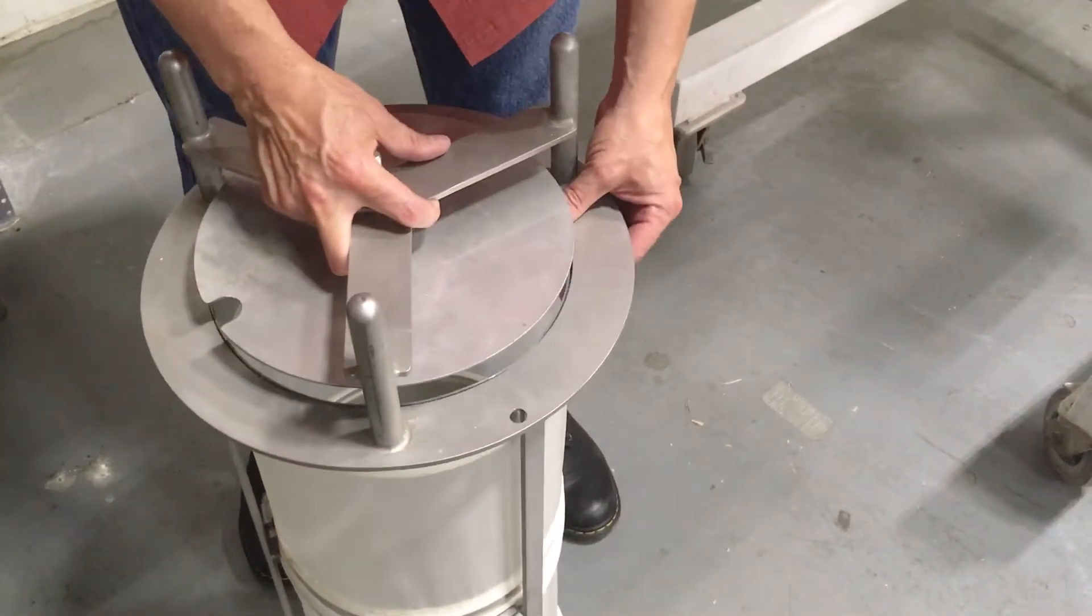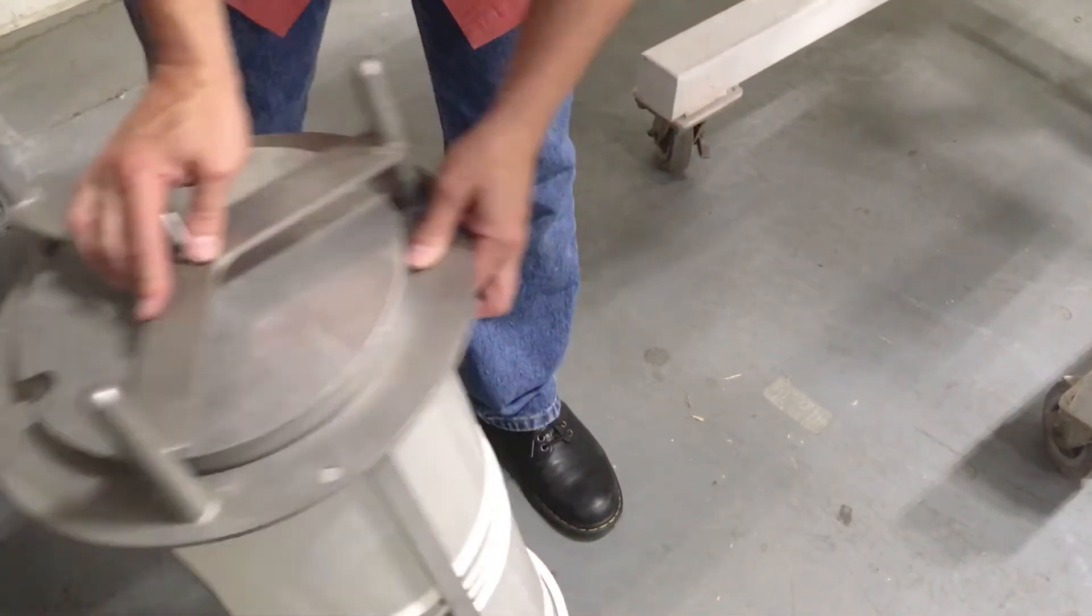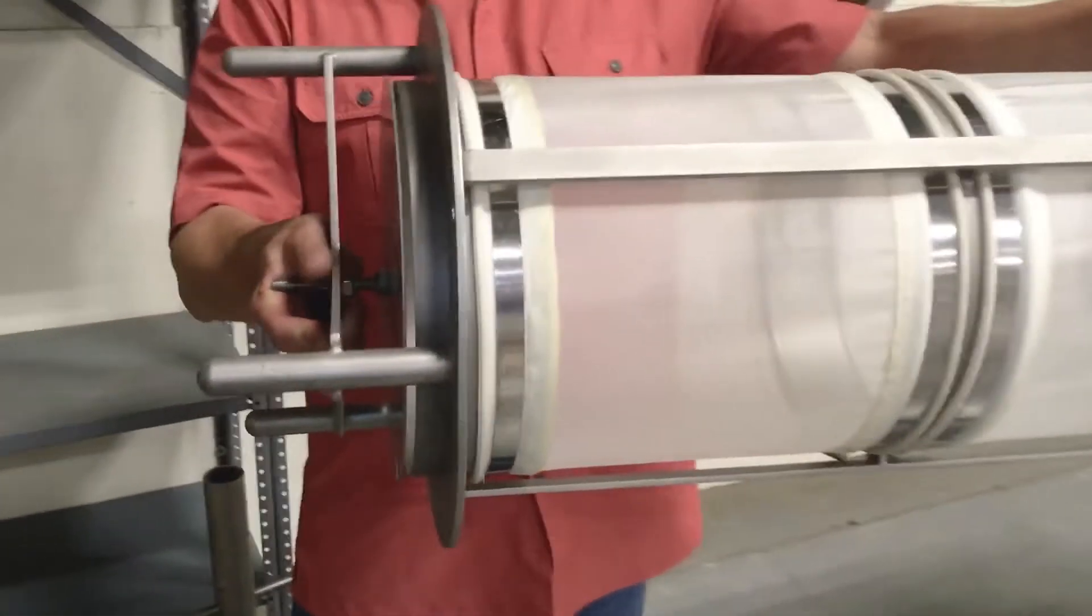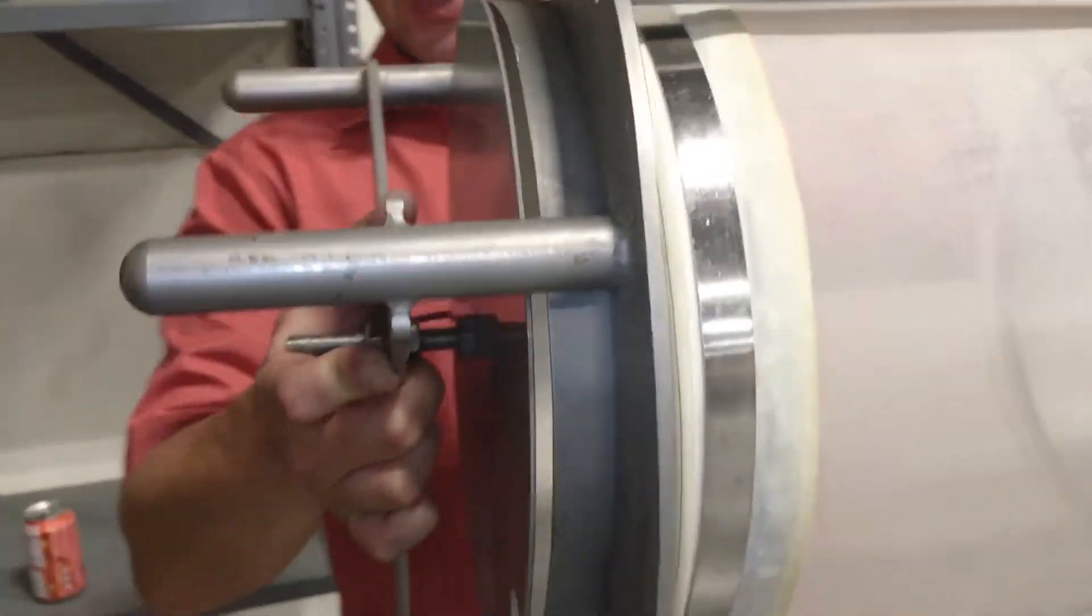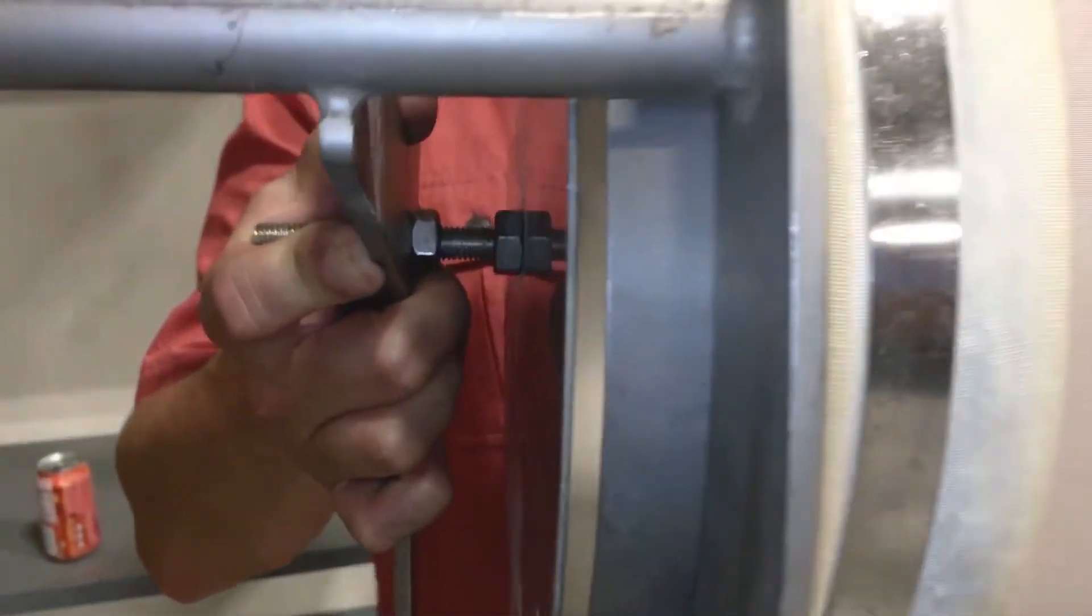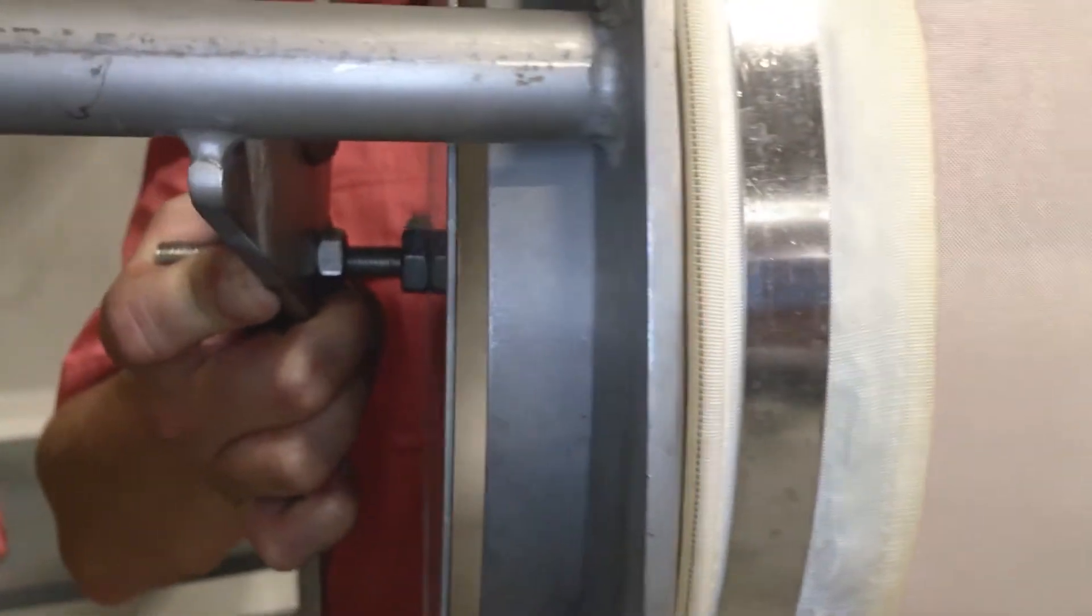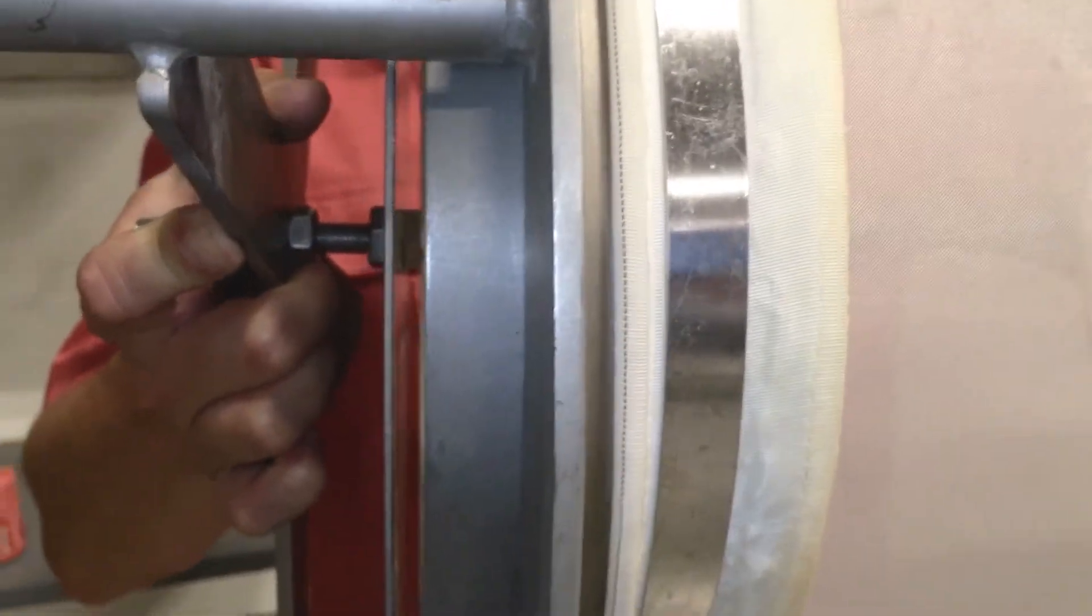The basket retainer sits on that and is in contact with those stay bars. When it's in compression, it's pushing on those stay bars to lock the basket in. You'll also notice there is a gap - in this case roughly a quarter inch - between the end of the basket and the adjustable battle plate.